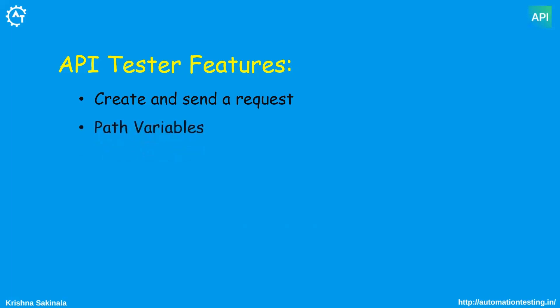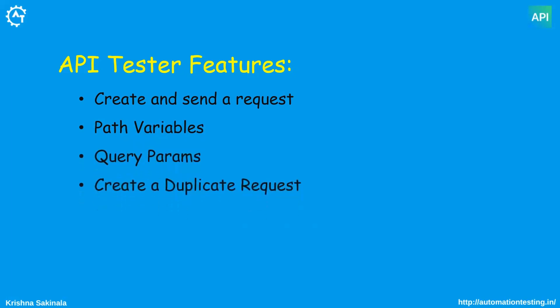You can provide path variables to your request and query parameters to your request. If you want to create a duplicate request — meaning you have a request and want to change something slightly — you don't need to create a separate request. You can duplicate that request and then modify it.